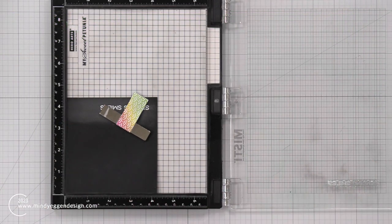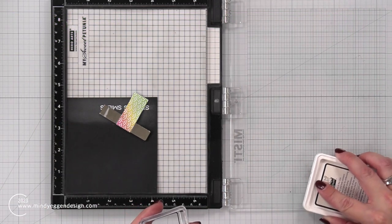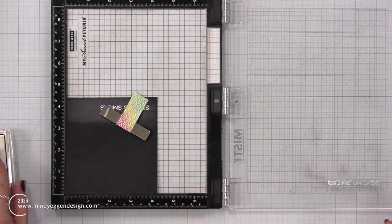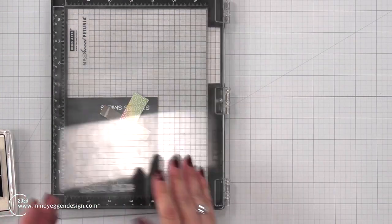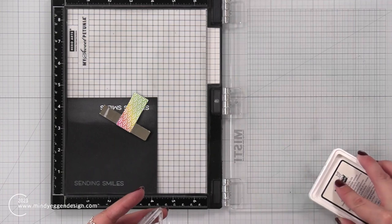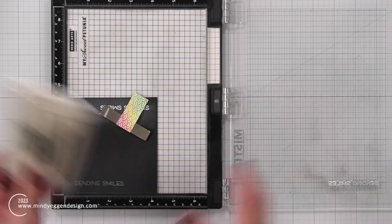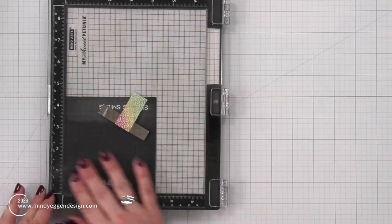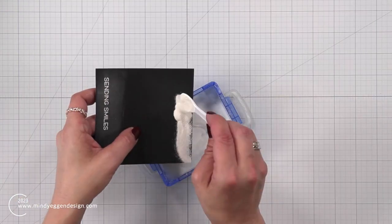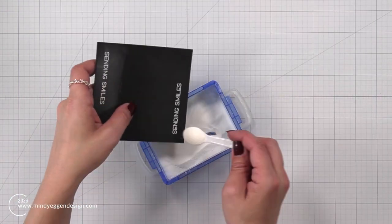Now for a sentiment, I have some black licorice cardstock here that I prepped with an anti-static powder tool. And I'm inking up a sentiment that I picked up off of the Virtual Friends add-on stamp set. I'm inking that up in the Yeti pigment ink and stamping that down twice. And I'm going to sprinkle on some white embossing powder.